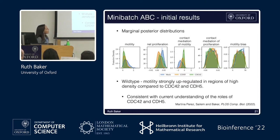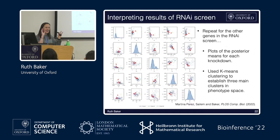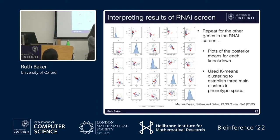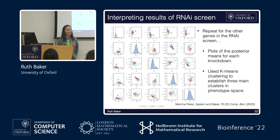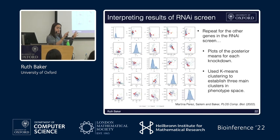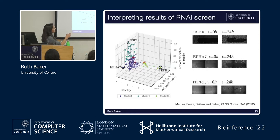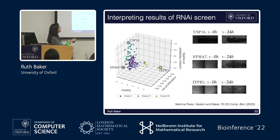Applying this to the whole dataset, we fit the method to a large number of genes from the RNAi screen, plot the posterior mean for each knockdown, and use k-means clustering to identify whether there are groups in function space. We find three main clusters in phenotype space — turquoise, purple, and green — distinguished by differences in the motility parameter, net proliferation rate, and contact mediation of cell motility.